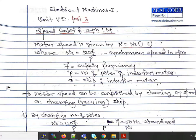Hello students. In this video lecture we are going to study the speed control of three-phase induction motor. In our last lecture we studied that the motor speed is given by n = ns × (1 - s), where ns is the synchronous speed given by 120f / p, where f is the supply frequency, p is the number of poles, and s is the slip of the induction motor.